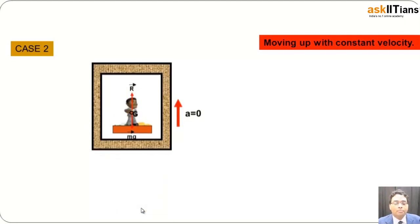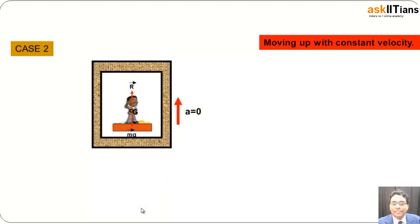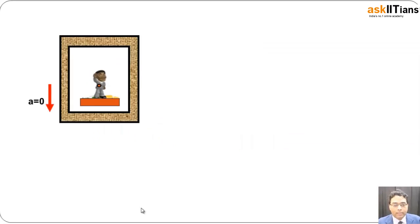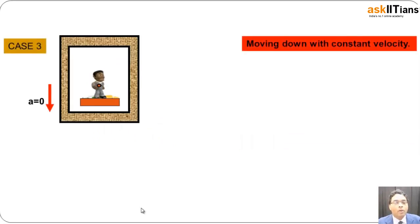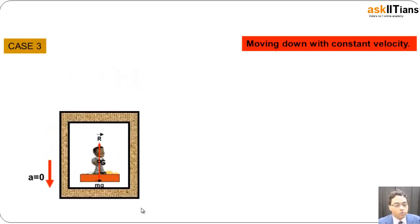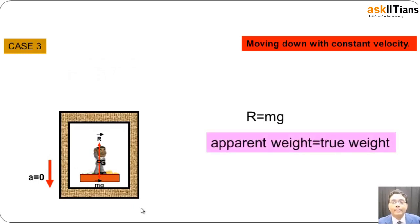If the body is moving up with an acceleration a equals zero, in this case as well the value of R is going to equal mg. If the value of R equals weight mg, apparent weight is going to equal the true weight. Then when the object is moving down with a constant velocity, obviously the value of acceleration is going to equal zero. In this case as well, the value of R equals mg, and apparent weight will be